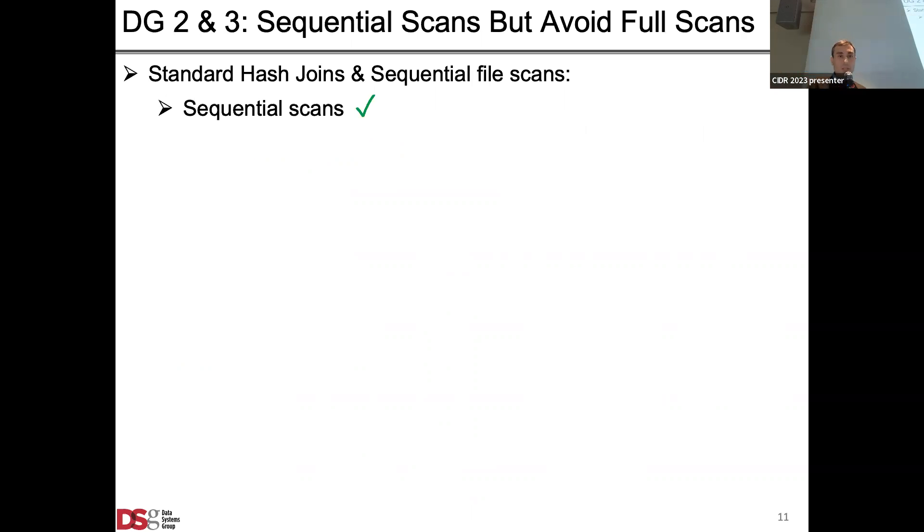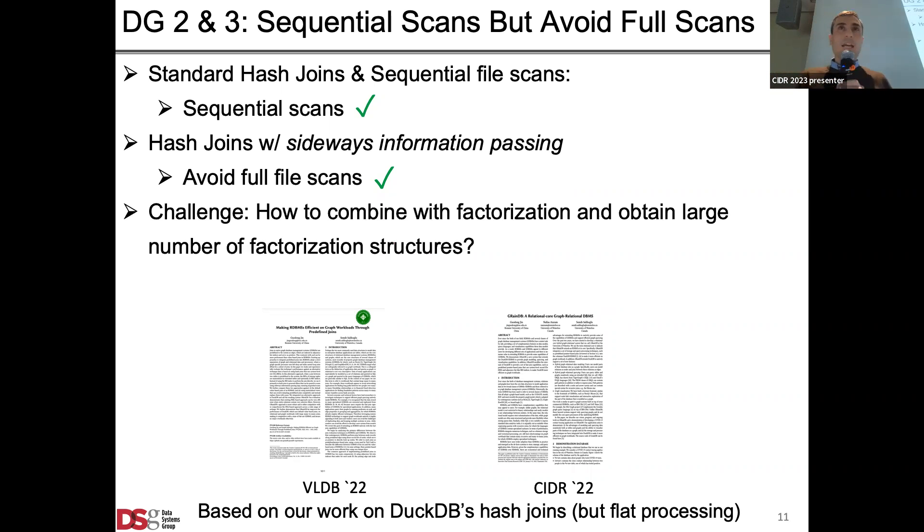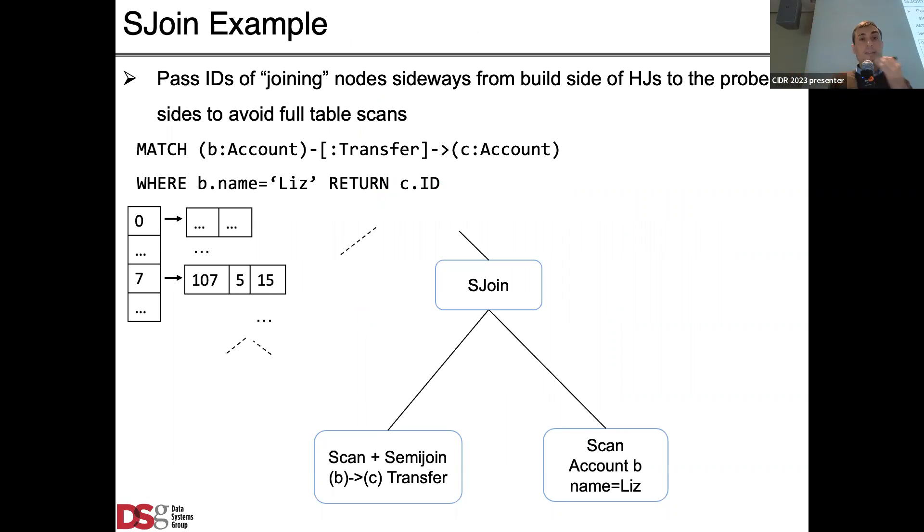For the second and third design goals of performing sequential scans and avoiding full scans we started with standard hash joins which get you sequential scans. To avoid full scans when possible we use sideways information passing. This is actually a technique that we had presented last year in CIDR on work we did in DuckDB. The core technical meat of this paper was on how to integrate factorization with this technique, particularly the challenges that we had in achieving a large set of factorization structures. We described two join operators, S-join and ASP-join, that achieve our three design goals plus achieves a large set of factorization structures.